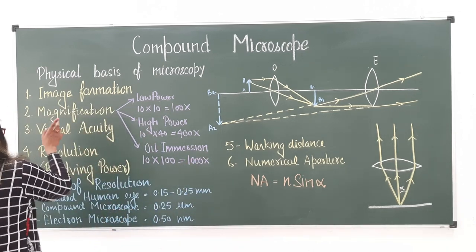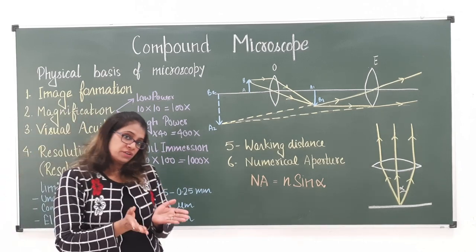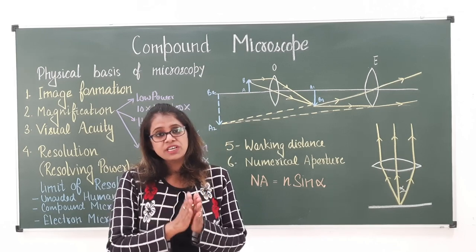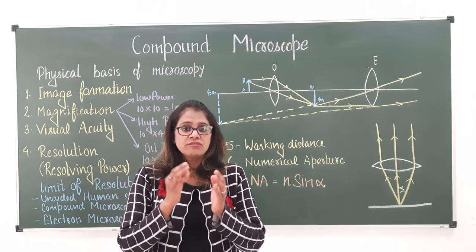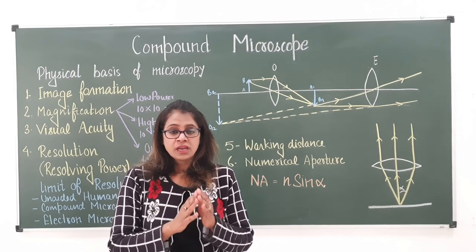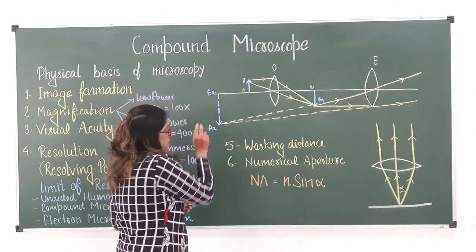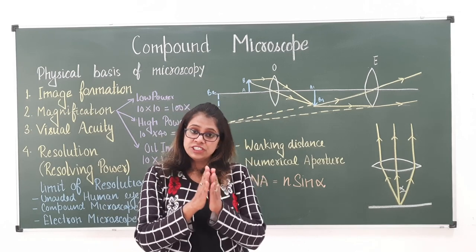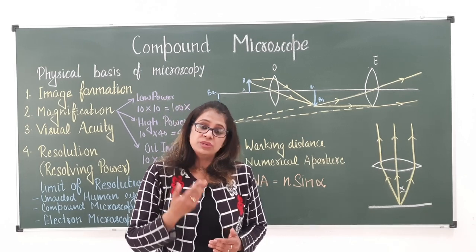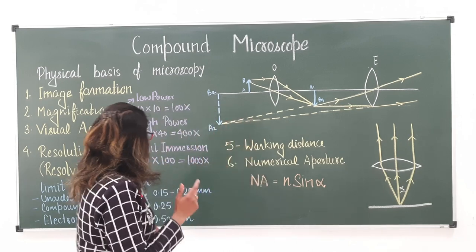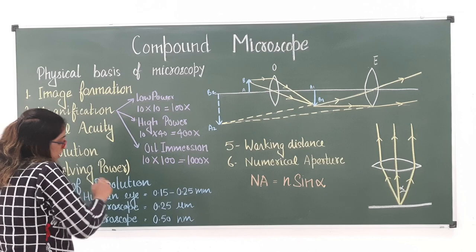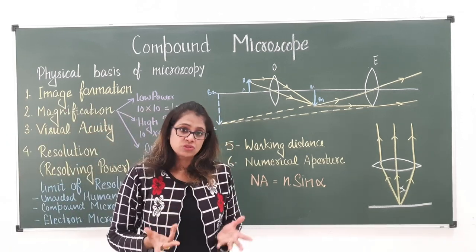Another exam question is about visual acuity. Visual acuity is a term used specifically for the eye — it is the ability of the eye to differentiate two points that are close to each other. The smaller the distance between two points the eye can distinguish, the better the visual acuity.